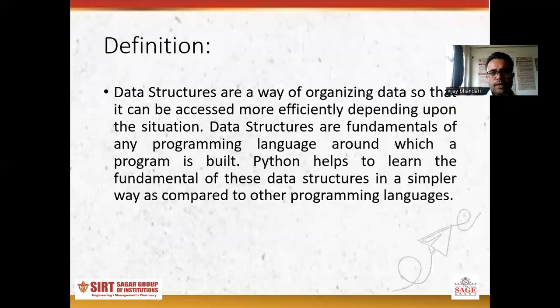Definition. Data Structures is a way of organizing data so that it can be accessed more efficiently depending upon the situation. Data structures are fundamentals of any programming language around which a program is built. Python helps to learn the fundamentals of these data structures in a simpler way as compared to other programming languages like C++, Java, Perl, COBOL. So it is just a way of organizing data so that it can be accessed more efficiently depending upon the situation.